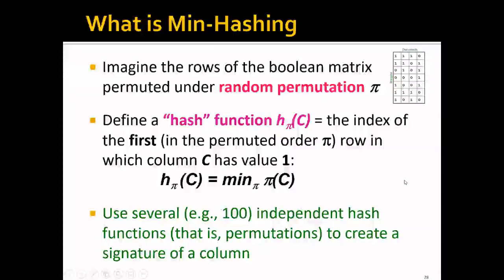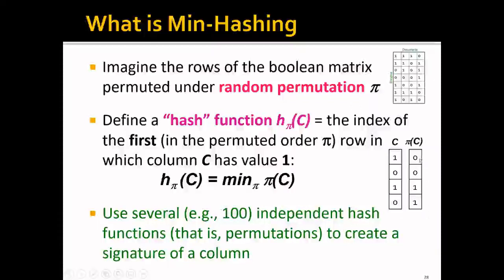So what is minhashing? Let's imagine that we have the rows of the Boolean matrix permuted under some random permutation π. So we might permute some of the rows in this matrix, and then we define a hash function h_π(C) to be the index of the first row in which column C has value one. And mathematically, we can write it down like this. To see this more clearly, let's look at an example. Let's say that we have C as a document here, and then we perform the permutation. And we will check the row of C one by one. Let's check the first row, second row, and the third row. And the third row is the first term that we got the one.